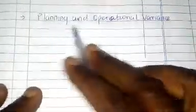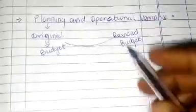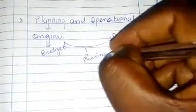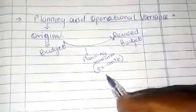Let us start with the planning and operational variance. When we say planning variance, it is when you compare the original budgets or standards with the revised budgets. The difference between the original budgets and the revised budgets is called the planning variance, and this is called ex-ante — meaning before.